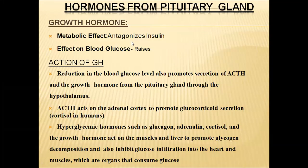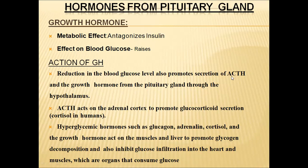Growth hormone is antagonistic to insulin and also raises blood glucose levels. When blood glucose is reduced, growth hormone is secreted from the pituitary gland and promotes ACTH secretion. Growth hormone binds with cell surface receptors and promotes glycogenolysis and gluconeogenesis processes, thereby helping to increase blood glucose levels.